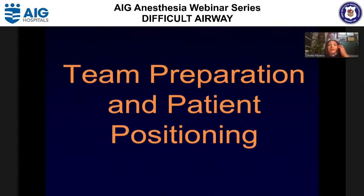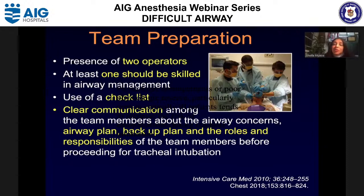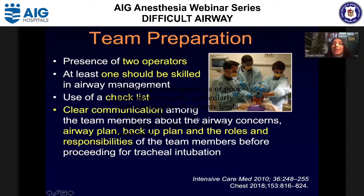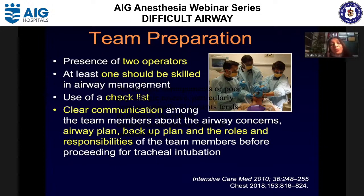Team preparation is extremely important. Evidence shows that for physiologically difficult airway ICU intubations, there should be two operators present, at least one skilled in airway management. Use checklists to ensure all tools for anatomical difficulty are ready and physiological optimization has been done. Clear communication among team members is essential — everyone's roles should be assigned, with a proper timeout. You should state the anatomical difficulty, the anticipated physiological difficulty, the plan for airway, and what to do if intubation fails.